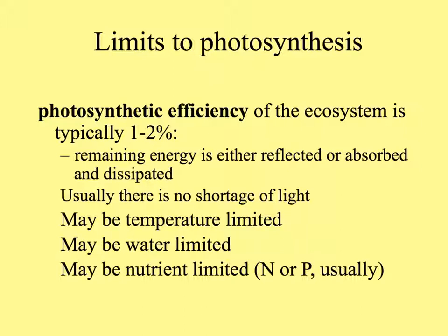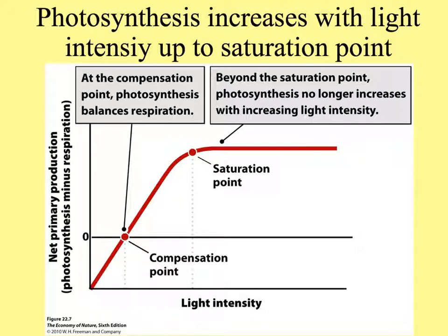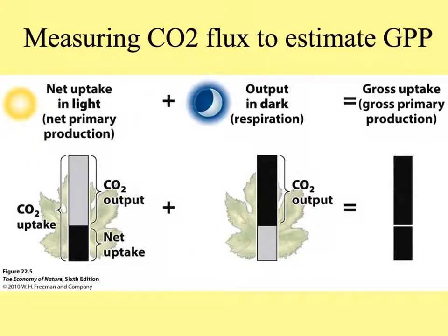Photosynthesis can be limited by temperature, water, and nutrients, but usually not by light, because it doesn't take much light to bring plants up to their saturation point. In this figure, the x-axis shows light intensity and the y-axis shows net primary production — the new biomass that plants make. At the compensation point, photosynthesis balances respiration. Beyond that, plants can build new tissues. Beyond the saturation point, plants can no longer use any extra light.